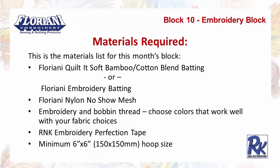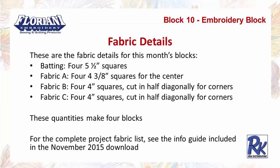Now let's look at the construction details. For this month's block you'll need: Floriani Quilted Soft Bamboo Cotton Blend Batting or Floriani Embroidery Batting, Floriani Nylon No-Show Mesh Stabilizer, embroidery and bobbin thread in colors that work with your fabric choices, R&K Embroidery Perfection Tape (the pink tape), and a minimum 6-inch by 6-inch (150mm x 150mm) hoop. For fabric, you need four 5½-inch squares of batting, Fabric A — four 4⅜-inch squares for the centerpiece, and Fabrics B and C — four 4-inch squares each, cut in half diagonally for a total of 8 triangles each. These quantities make 4 blocks.